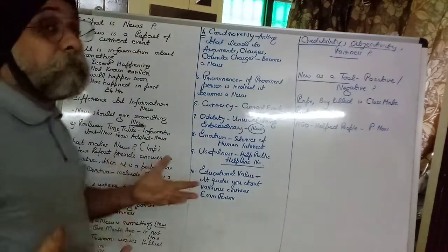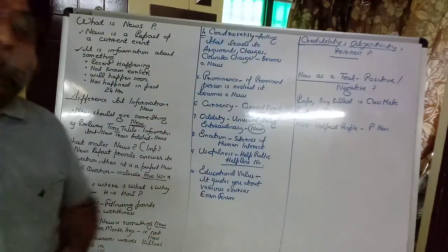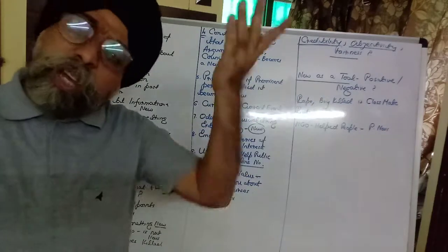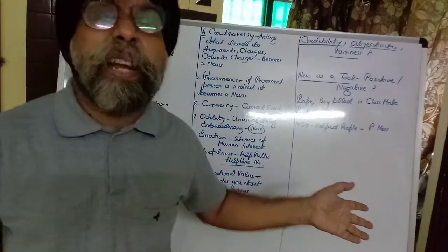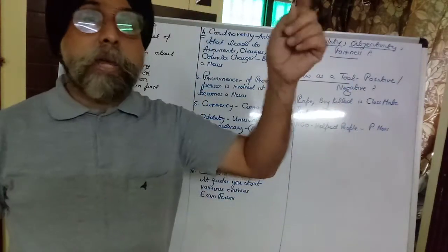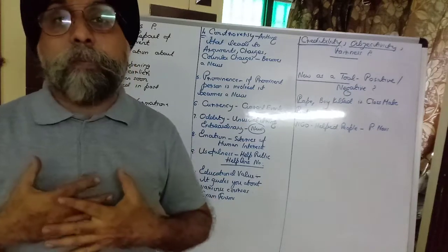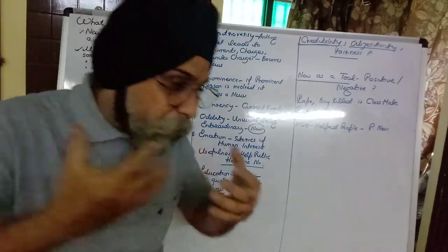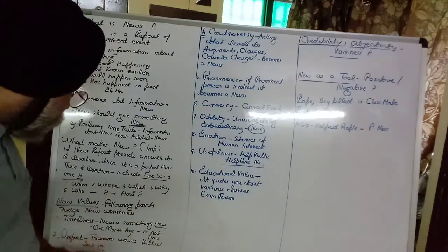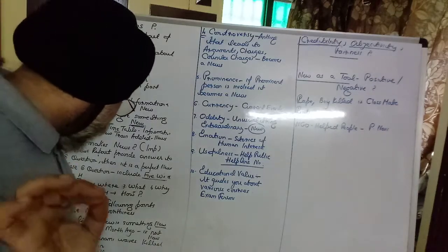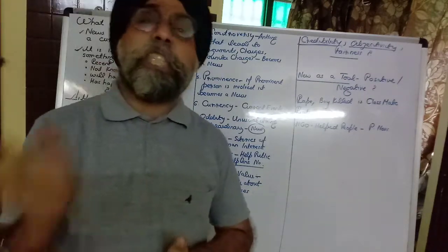Next is proximity. The textbook gives this example: if a plane crashes in America, we hear about it but don't discuss it further. But if a plane crashes in India, we feel very sad about it and discuss it for two to four days. That closeness is proximity.